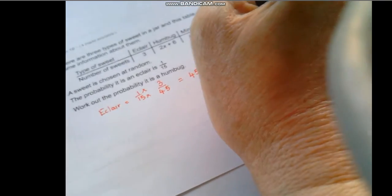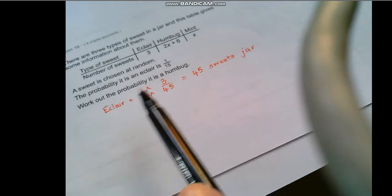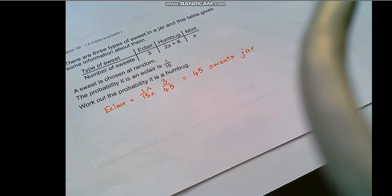So to multiply 1 by 3 means we have to multiply the bottom by 3 and that gives us 3 out of 45. Now this tells us therefore that we have 45 sweets in the jar because all they've done is they have simplified this fraction here 3 out of 45 to be 1 out of 15. Okay so now we know there's 45 sweets in the jar then we can look a bit further into the question and see how we can work out the probability that it is a humbug.